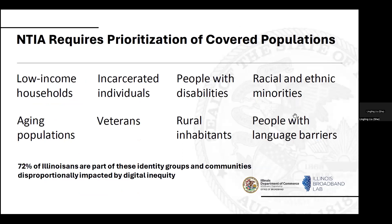With the digital equity capacity grant, NTIA requires that we prioritize funding to serve the covered populations. These populations include low-income households, aging populations (folks 60 years and older), incarcerated individuals, veterans, people with disabilities, and people with language barriers. It is important to note that 72 percent of Illinoisans are part of these identity groups and communities — these are populations disproportionately impacted by digital inequity, hence NTIA's requirement to prioritize funding in serving them.